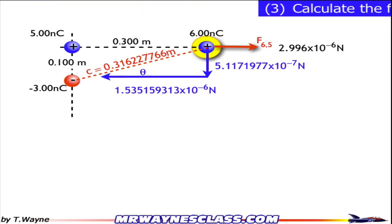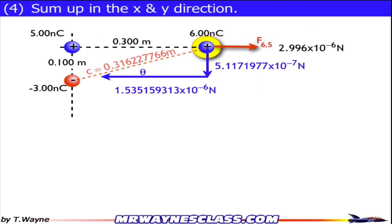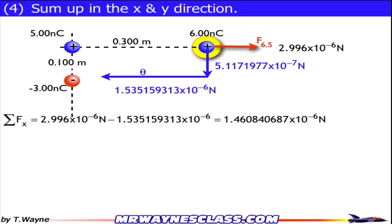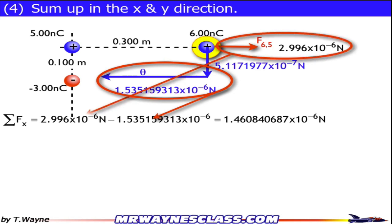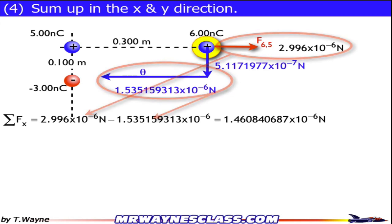Now I've got to sum up the forces. So sum up the forces in the x and y direction. Sum up the forces in the x direction, so that's all these horizontal forces, everything right minus everything going left, and that gives me 1.46 times 10 to the negative 6 Newtons. Now sum up the forces in the vertical direction, but there's only one force. So it's just the 5.12 times 10 to the negative 7 Newtons going down.